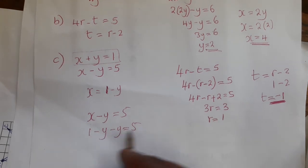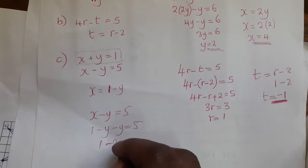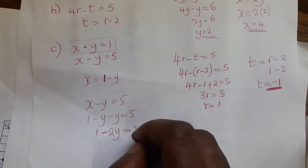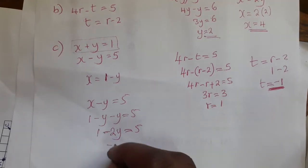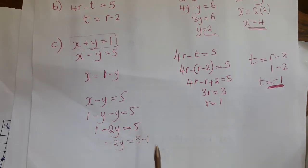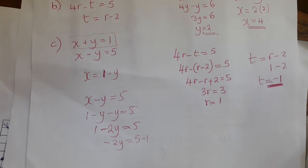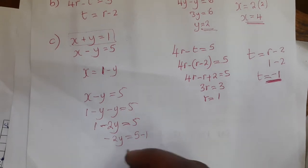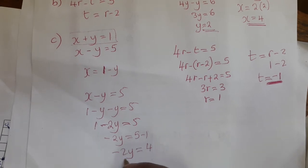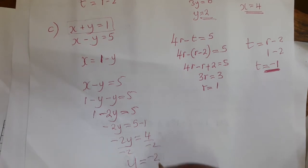We simplify: 1 minus 2y equals 5. Both y terms are negative. So negative 2y equals 5 minus 1. That gives us negative 2y equals 4. Dividing both sides by negative 2, y equals negative 2.